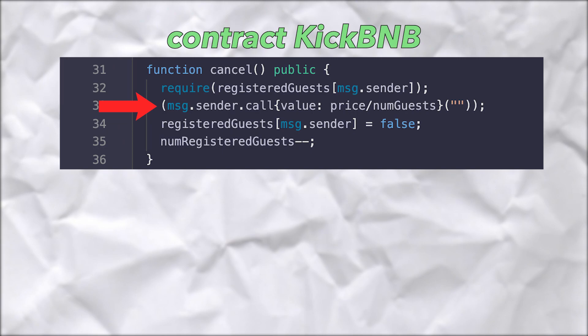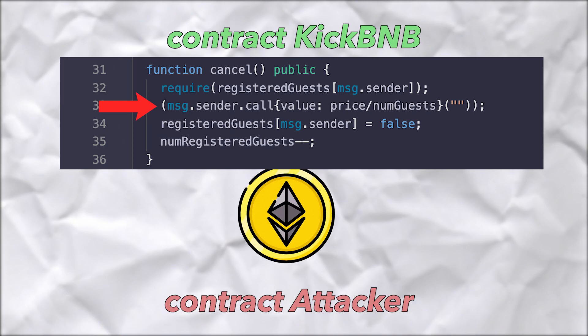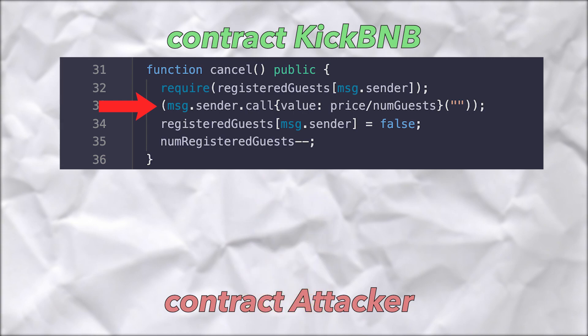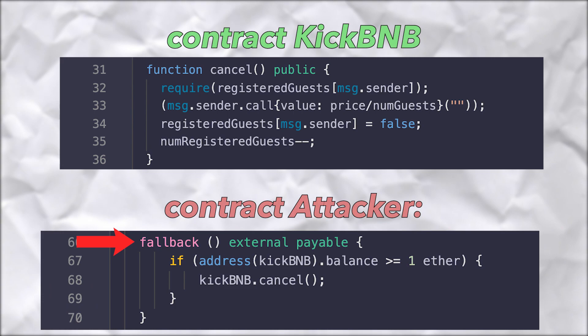In cancel, when the call function is called on that line it sends money to the specified account, but in Solidity it also calls a function named a fallback function in the other account. In the fallback function of the attacker smart contract, we can recall the cancel function — that's what re-entrancy means.